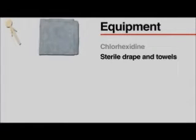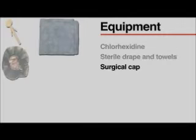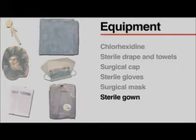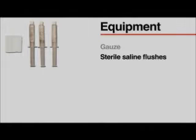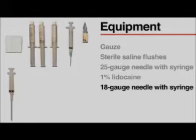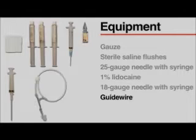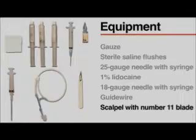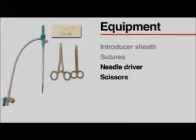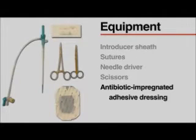To create a sterile field, you will need chlorhexidine, a sterile fenestrated drape and towels, a surgical cap, sterile gloves, a surgical mask with eye shield, and a sterile gown. To place the introducer sheath, you will need gauze, sterile saline flushes, a 25 gauge needle with syringe, 1% lidocaine, an 18 gauge introducer needle with syringe, a guide wire, a scalpel with a number 11 blade, the introducer sheath with an internal obturator, sutures, a needle driver, scissors, and an antibiotic impregnated adhesive dressing.